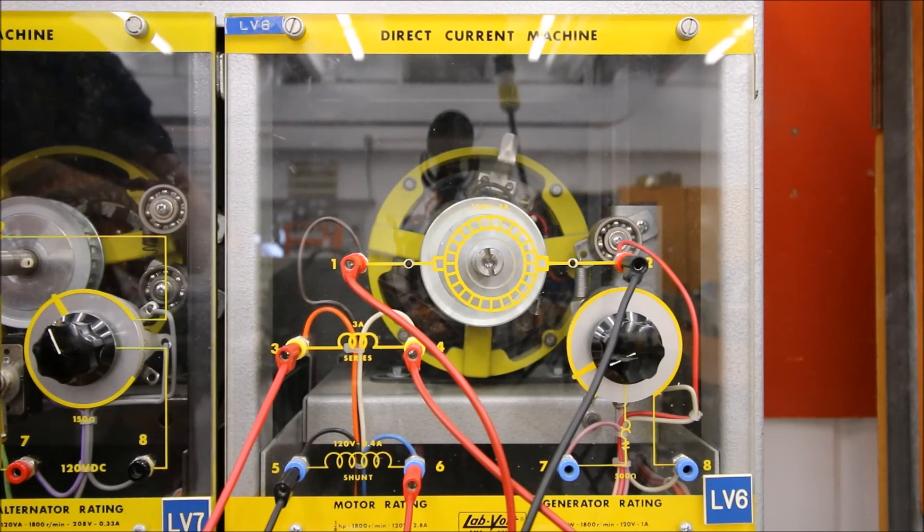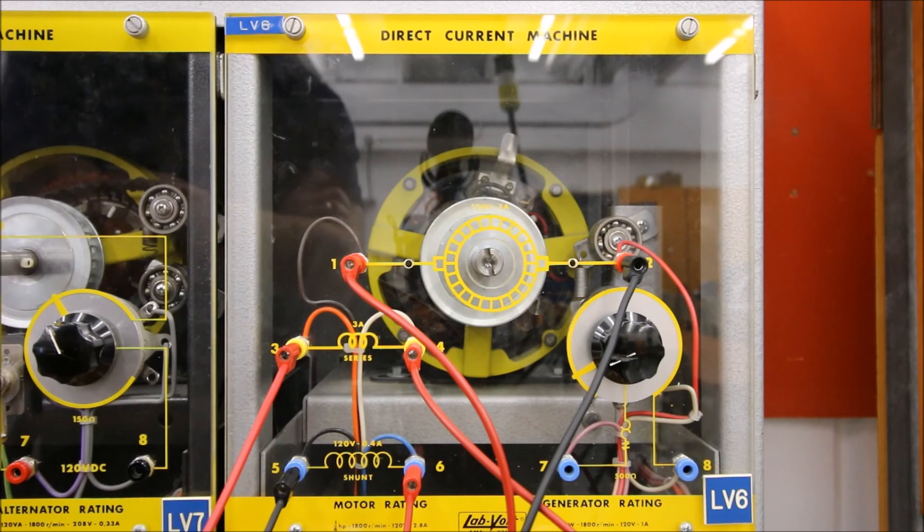The series is going to win. The series has a lower resistance, meaning that more current is going to flow there. The shunt has a higher resistance, so the series is going to trump the shunt winding.